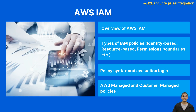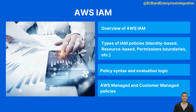AWS Identity and Access Management is a web service that helps you securely control access to AWS resources for your users. It allows you to manage users, security credentials, and permissions that dictate who is allowed to access which resources. IAM policies are the primary method to set permissions in AWS. A policy is an entity that, when attached to an identity or resource, defines their permissions. AWS evaluates these policies when a principal, such as a user, makes a request.